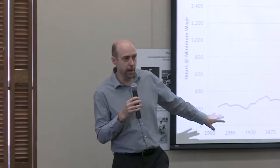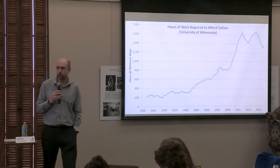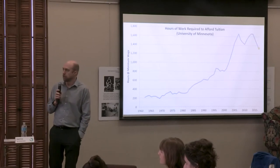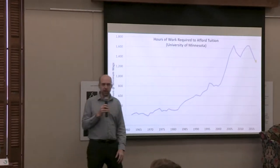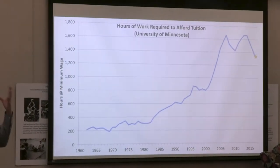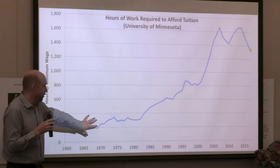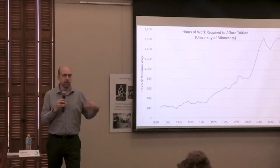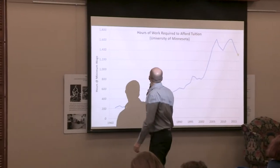Let's talk about working your way through school and how realistic that is nowadays. This is University of Minnesota-specific data. The blue line shows the number of hours a student would need to work at a minimum wage job — a typical student job — to afford one year of tuition. Looking back from the 60s through the 80s, we're talking 200 to 400 hours. At 40 hours a week, that's maybe 10 weeks — a summer job.